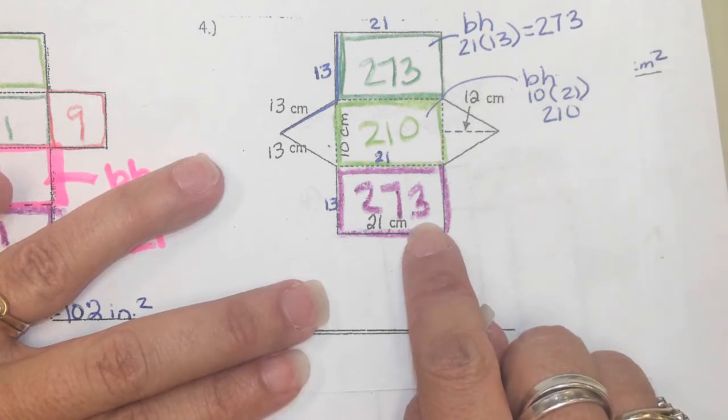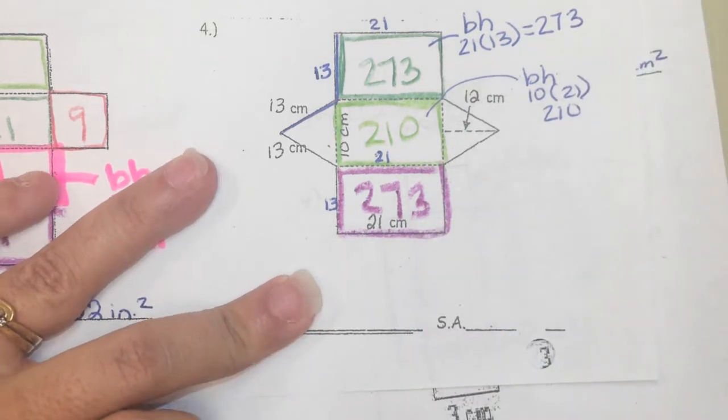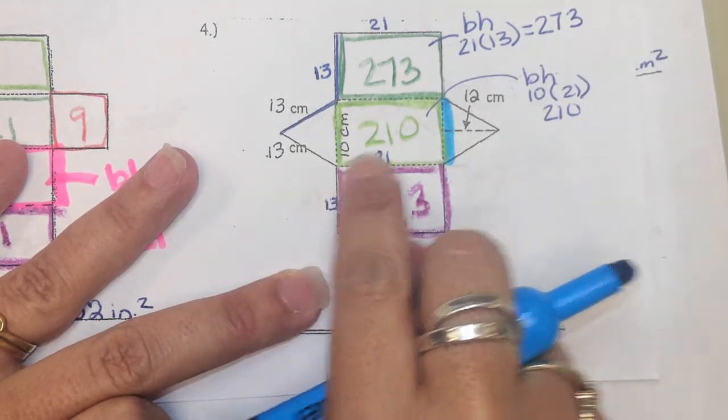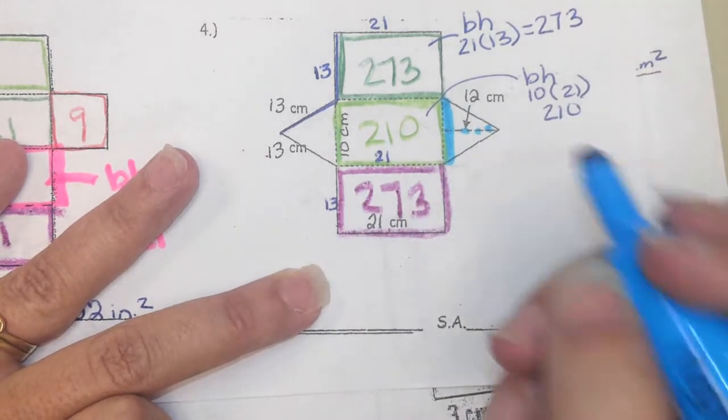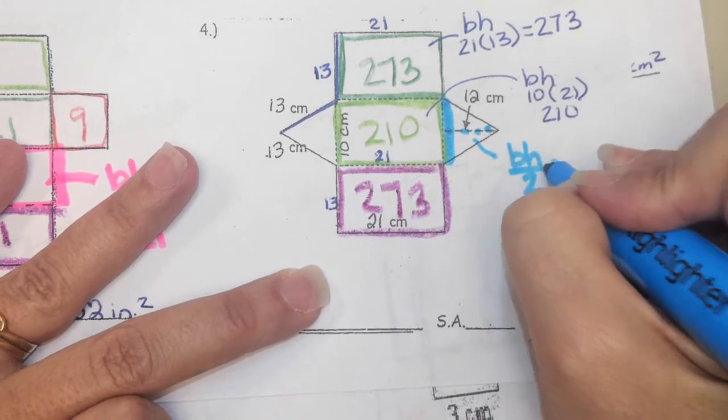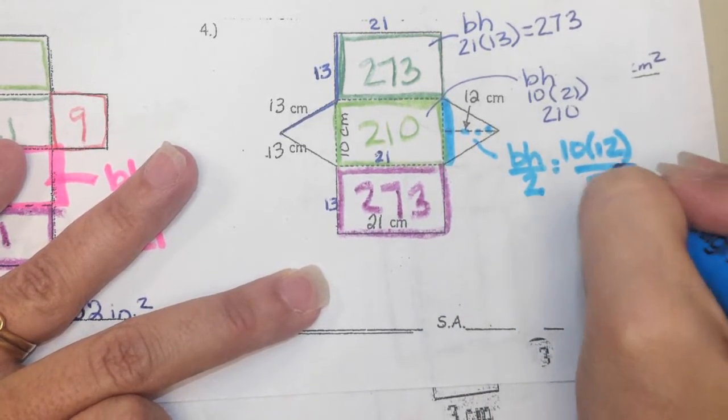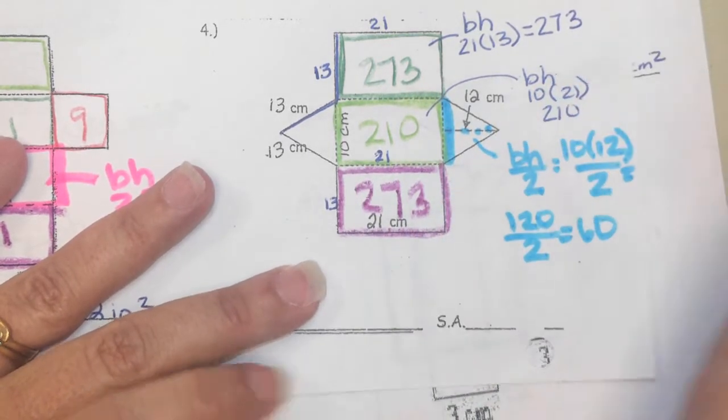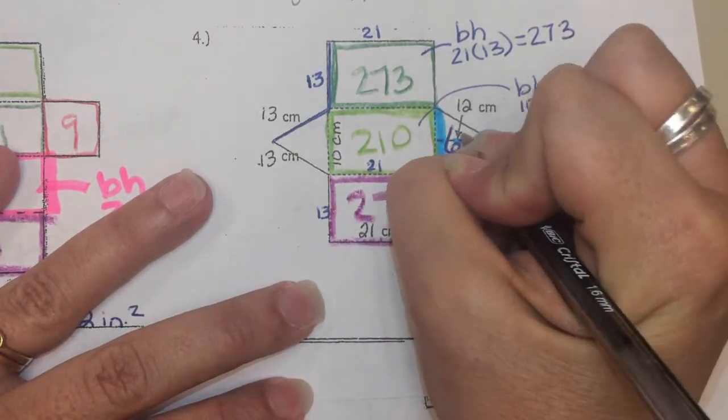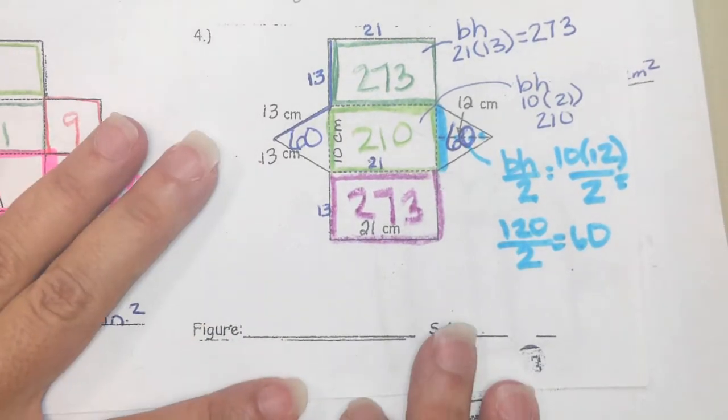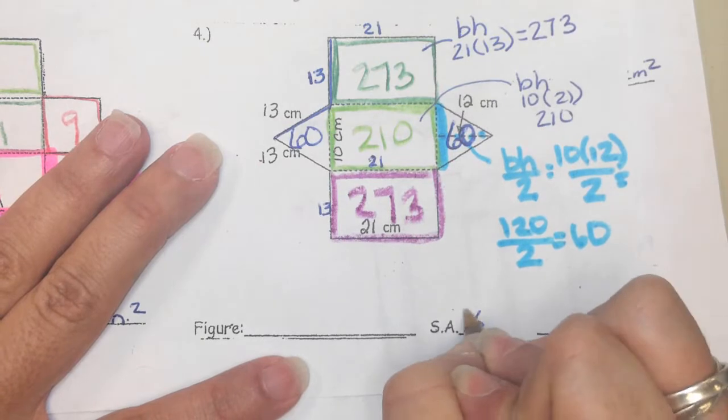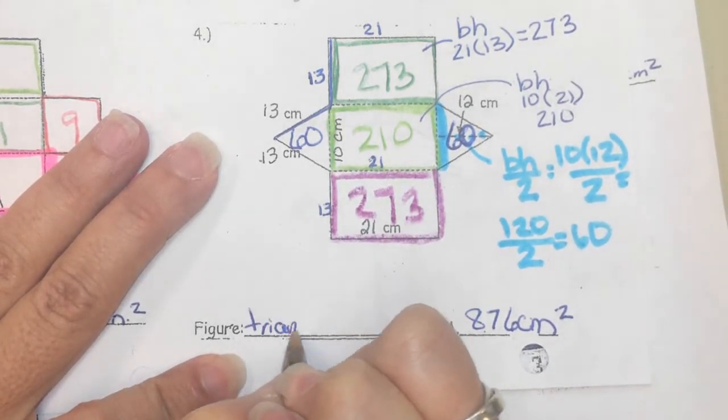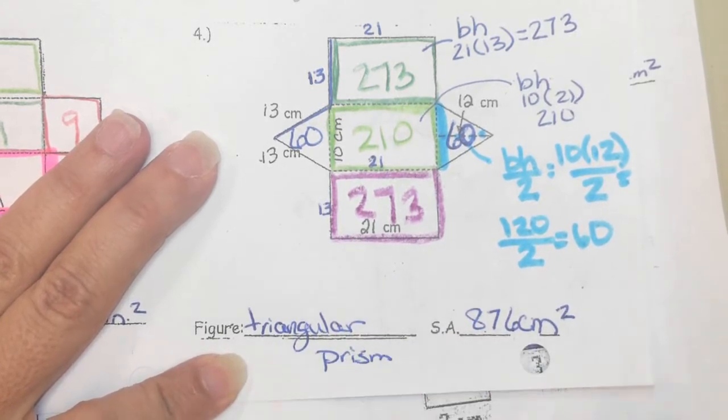This one is a 13 times 21, which I have up here, so I can just copy, 273. Remember with a triangle, you're doing base times height divided by 2. This base from here to here is 10. If it's 10 on this side, it's 10 on this side. What is the height? 12. Base times height divided by 2, 10 times 12 divided by 2. If you don't divide by 2, your answer is going to be incorrect. It is 60 for this triangle and 60 for that triangle. In the end, when you add it all up, I got 876 centimeters squared, and it is a triangular prism.